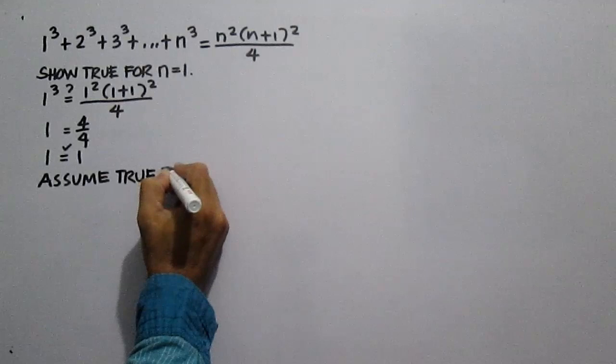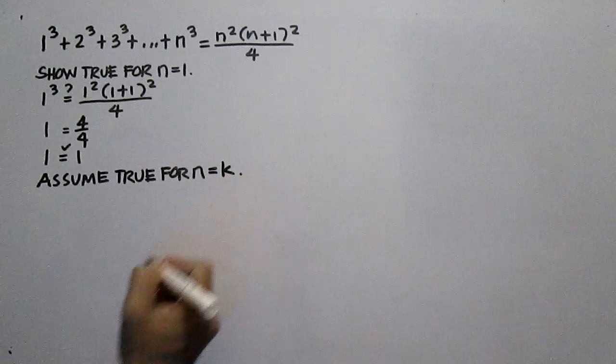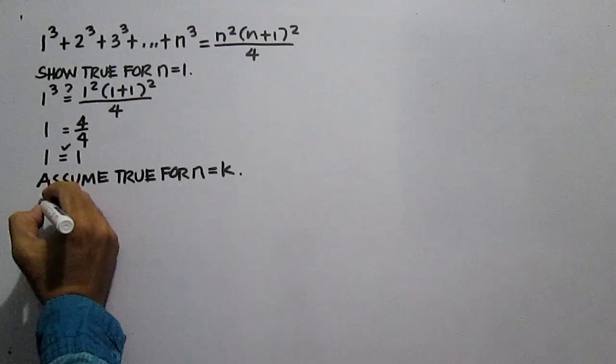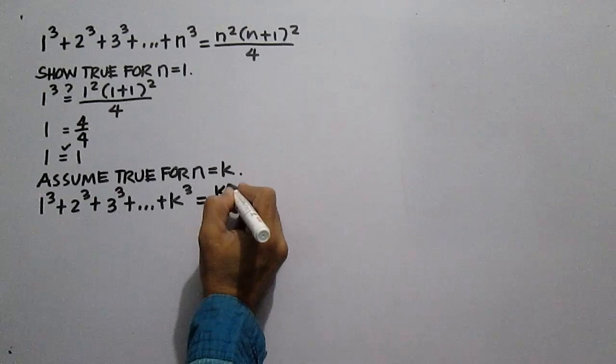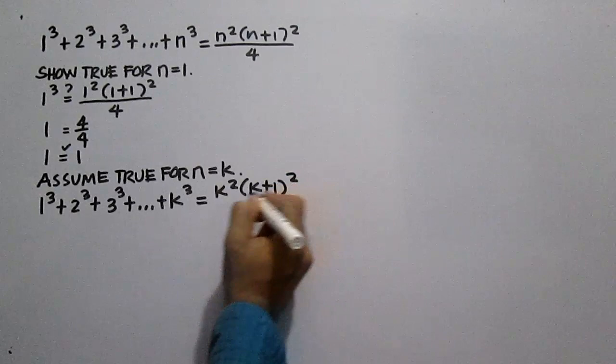Assume that the statement is true for any natural number k. Substitute k for n: 1 cubed plus 2 cubed plus 3 cubed plus dot dot dot plus k cubed is equal to k squared times the square of the quantity k plus 1, all over 4.